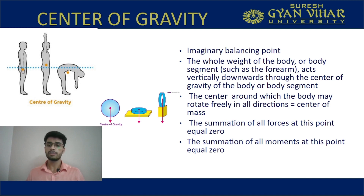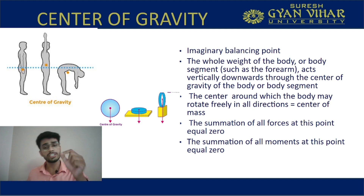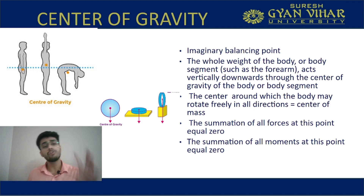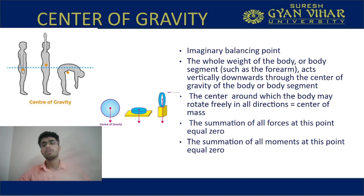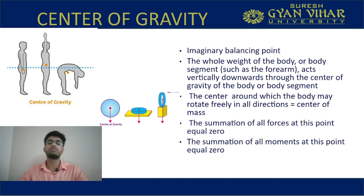The center around which the body may rotate freely in all directions equals the center of mass. Sometimes center of gravity is also called center of mass, but the condition is that the body must be able to rotate freely in all directions around that center, and the summation of all the forces acting at that point will be zero. Center of gravity is an imaginary point, gravity always acts downward, and it equals center of mass when the body can rotate freely in all directions.